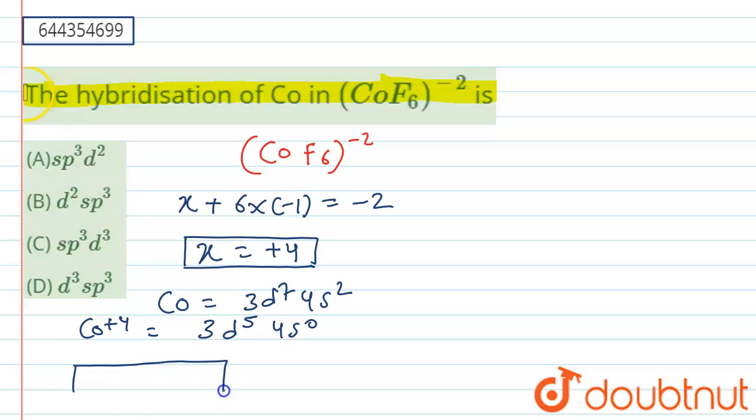So if we try to draw this in the orbital picture, it will be more clear how these things are happening. So it has one, one, two, one, two, three, four, five. So it has five d orbitals and we have 4s, and we have 4p here, that is three p orbitals.